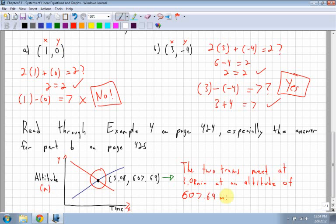So it's basically interpreting the graph and saying, okay, well, this is one tram, that's the other tram. They both meet at that point. That's what the point means, is that that's where they meet. And where they meet is at 3.08 minutes at an altitude of 607.69 meters. So just make sure that you are able to interpret graphs.